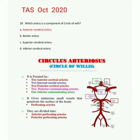To summarize the formation of the Circle of Willis: two anterior cerebral arteries, two internal carotid arteries, two posterior cerebral arteries, two posterior communicating arteries, and one anterior communicating artery. So in this question, the component of the Circle of Willis is the anterior cerebral artery.